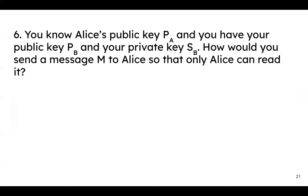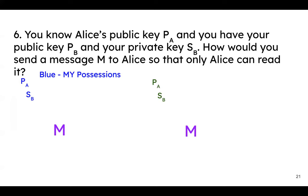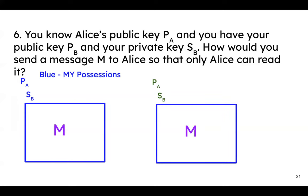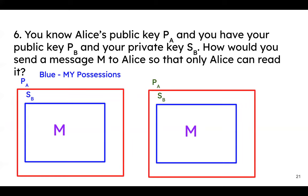This question I made a visualization for because I'm a visual learner and the math notation tripped me up at first. You have your message M and your keys. Alice's public key is P_A, your secret key is S_B since you're Bob. First, you use your private key to encrypt the message — that's how Alice knows it's from you, because you're using your private key to lock up the box. Then you use Alice's public key to encrypt that, so now you have two boxes.